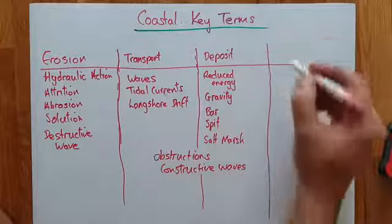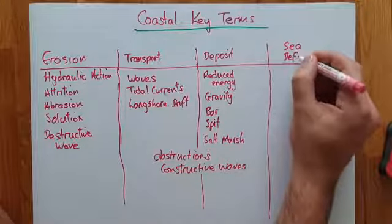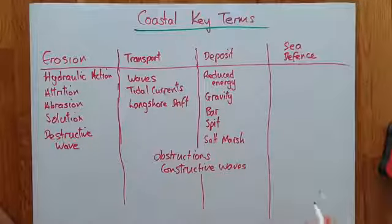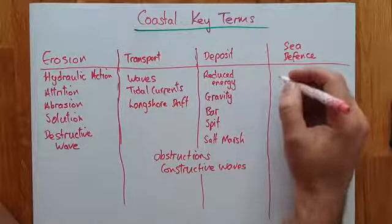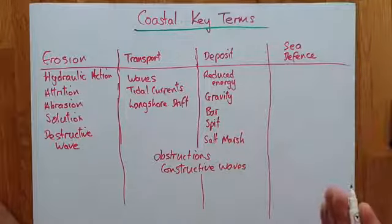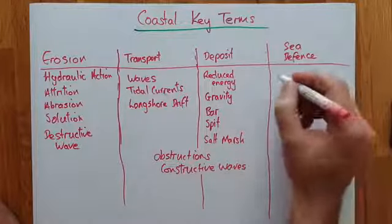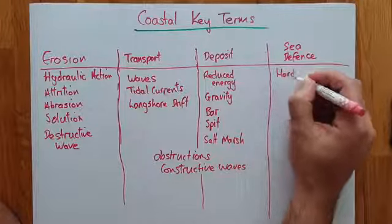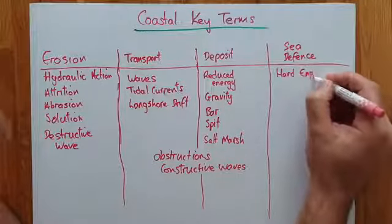The last section is sea defenses. Because we live at the coast it has an impact on us. Sea defenses can be split into two areas: hard engineering — things that are built to withstand the sea and the erosion effects of the sea.